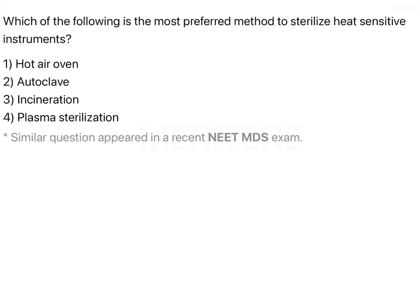Which of the following is the most preferred method to sterilize heat-sensitive instruments? Hot air oven, autoclave, incineration, or plasma sterilization?